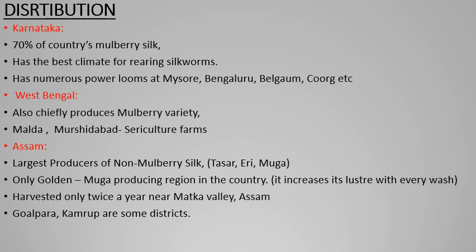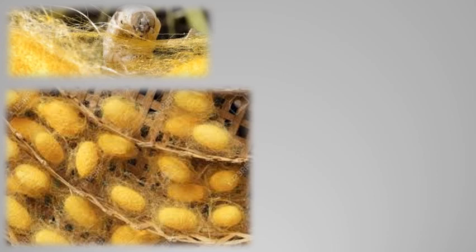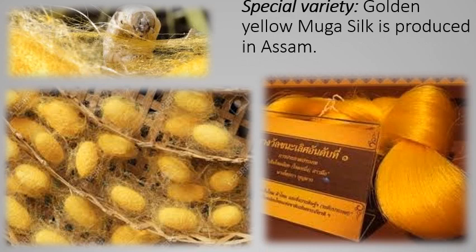Assam is different from Karnataka and West Bengal as it produces non-mulberry silk like tasar, eri, and muga. Muga is golden in color and famously increases in luster when washed. It is harvested only twice a year near the Brahmaputra valley in Assam. The golden muga silk is considered very expensive mainly because of its rarity — the silkworm secretes a golden thread, and the resulting silk fiber is a beautiful golden-yellow color.